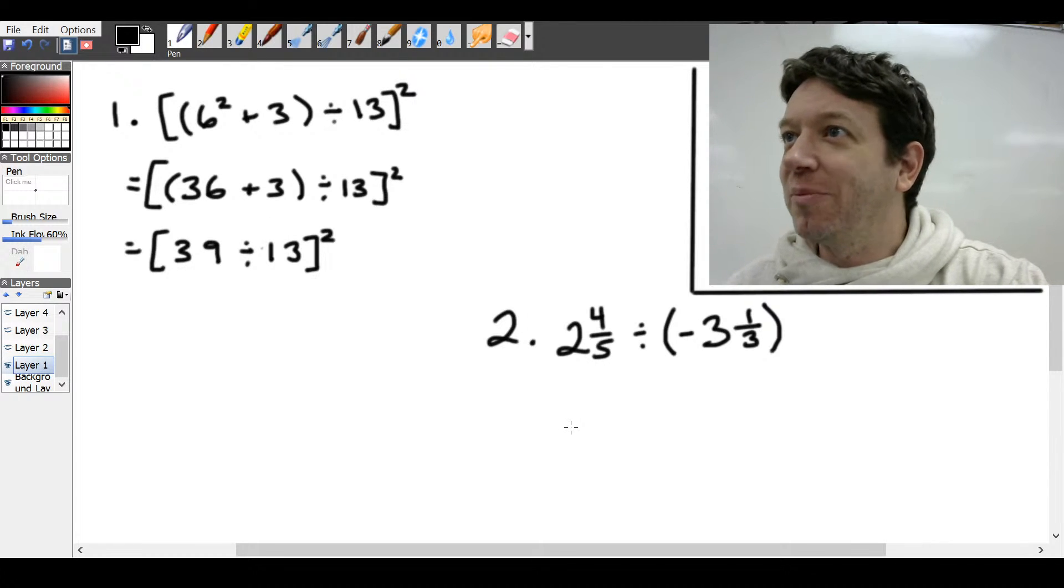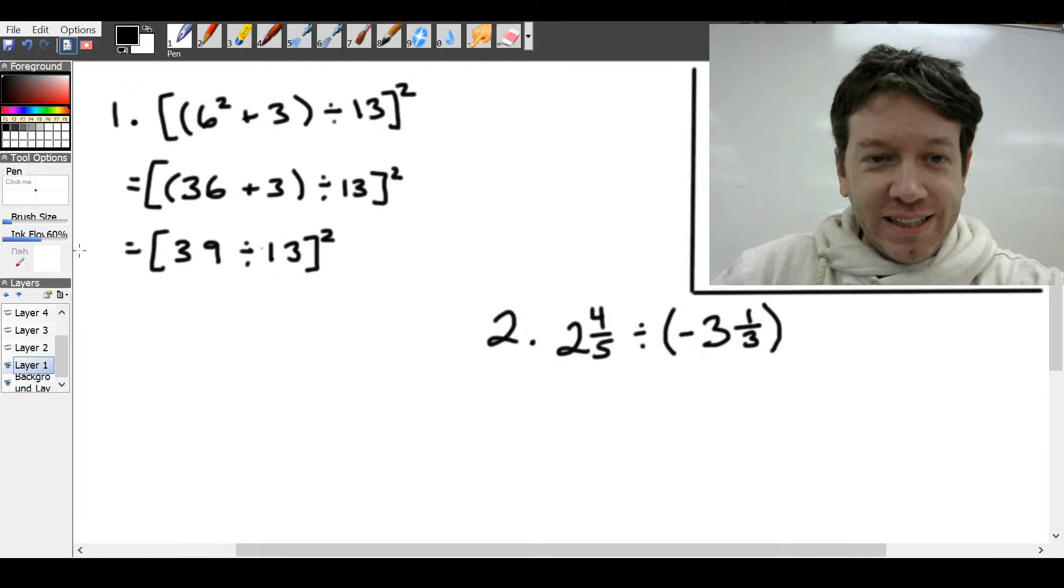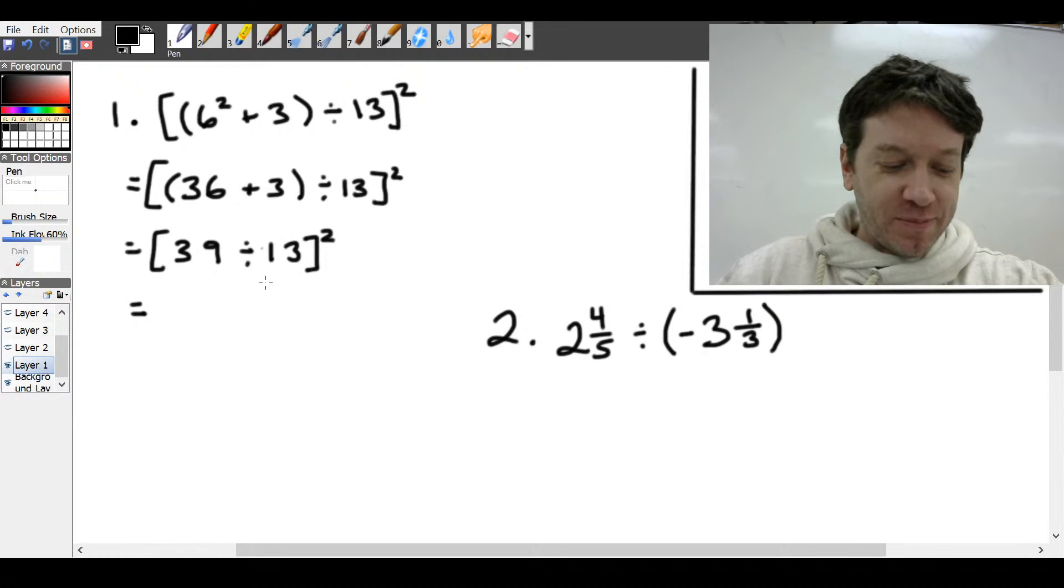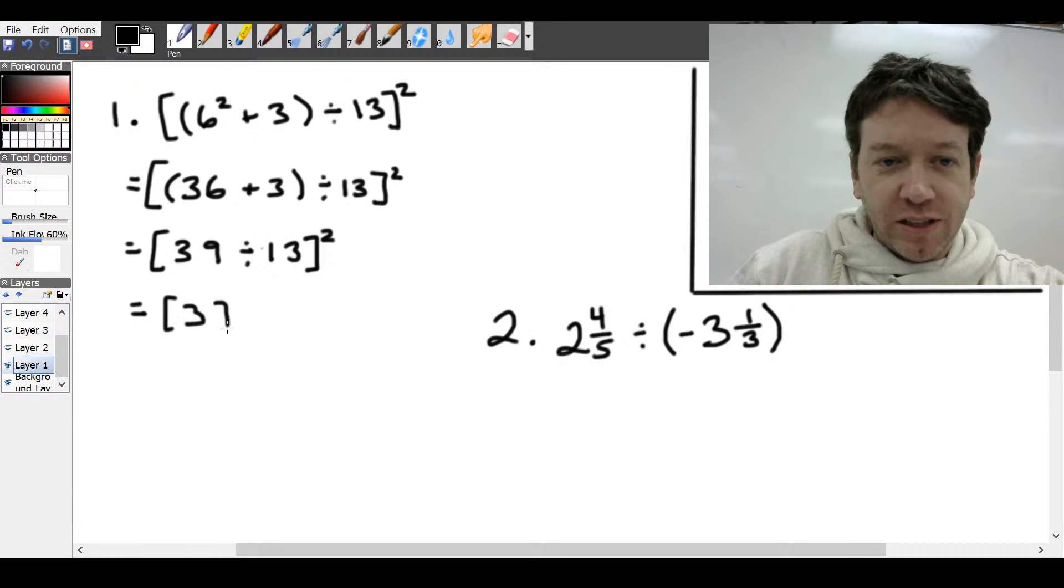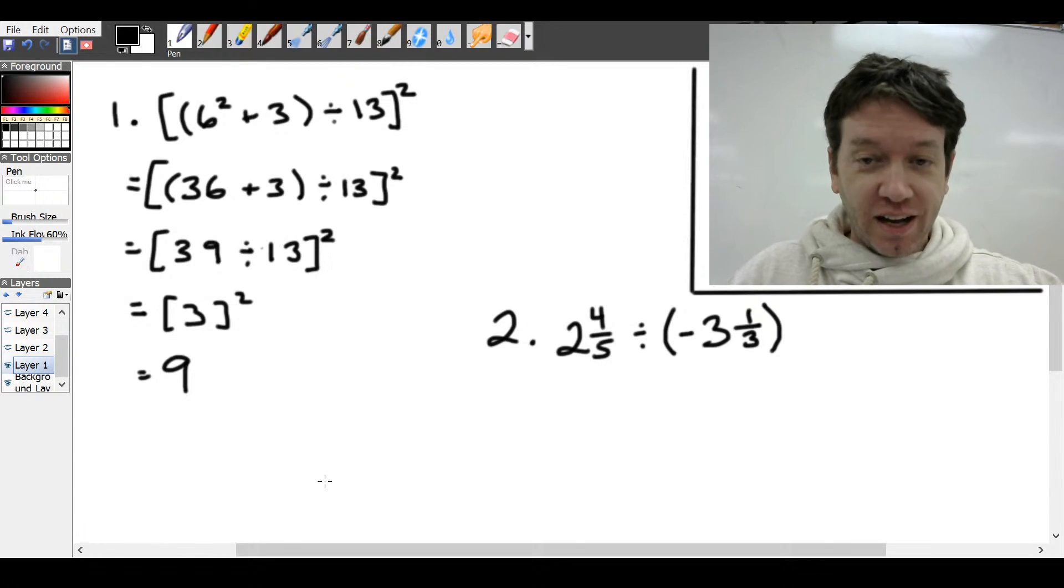So I just had an error message pop up, but I think we're okay. So let's continue. So 39 divided by 13 is going to be 3. And then 3 squared is 9. Make sure you're following that correct order for BEDMAS or PEMDAS or whatever it is you've learned.